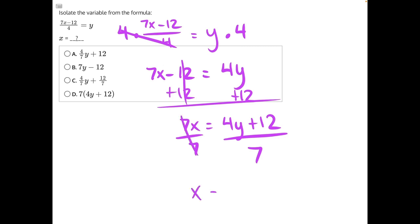leaving us with x is equal to 4y plus 12 over 7, or if we want to separate it out, 4y over 7 plus 12 over 7, making answer choice C our correct answer.